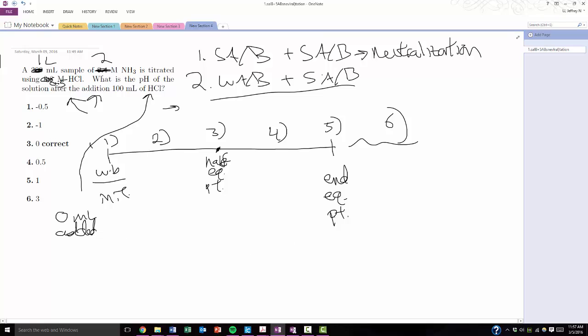So you can break any titration down into these six phases. And any particular question will only ask you about one of these six phases. It's up to you to figure out which phase you're in, one through six. And the way you do that is you first need to figure out am I at the equivalence point? Am I before it? Or am I after it?